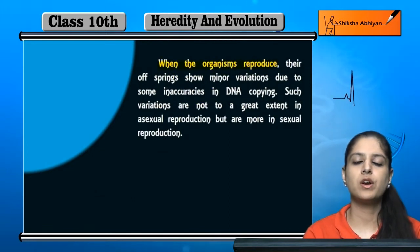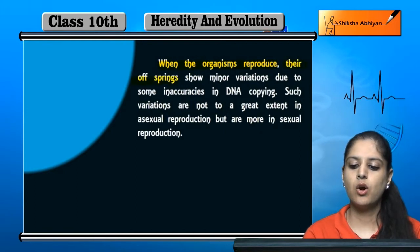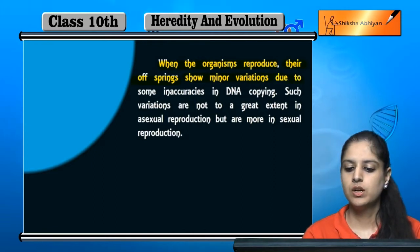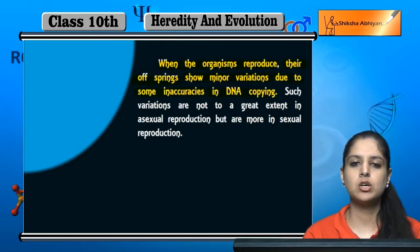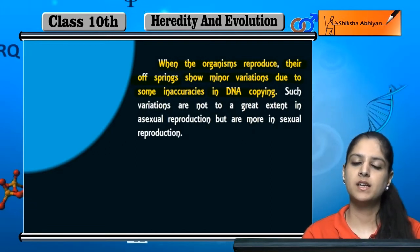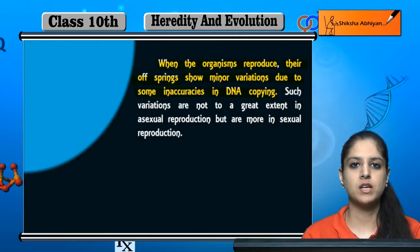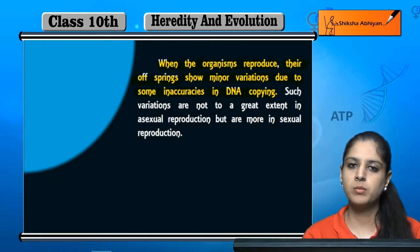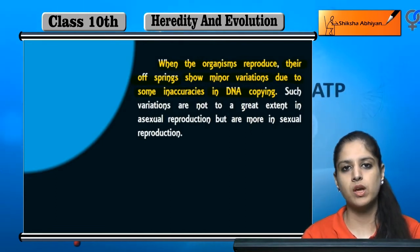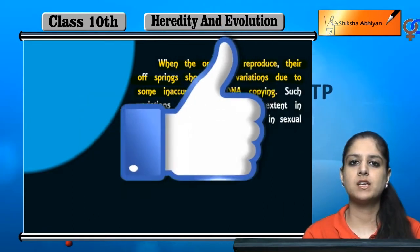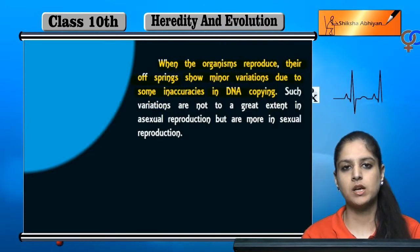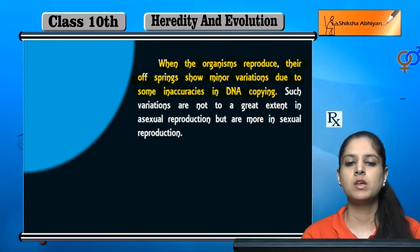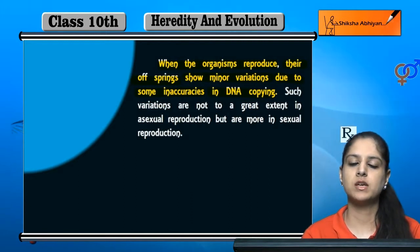Jab bhi ek organism reproduce karta hai, toh their offsprings show minor variations. Yeh jo variations hote hain, kis wajah se hote hain? Due to some inaccuracies in DNA copying. Parent se jo parent ka DNA hai, woh copy hokar offspring mein chala jata hai. Ab agar is copy hone mein kuch inaccuracy reh gai, kuch thodhi si kami reh gai, ya kuch alag tariqe se DNA copy ho gaya — agar poore perfect tariqe se DNA copy hokar parents se offspring mein chala gaya, toh koi variation nahi hoga. Lekin agar kuch bhi change aa jata hai copy hone mein, toh uski wajah se yeh variations paida ho jaate hain, parents se offspring.